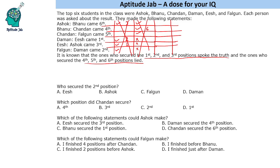Let us say we take 2 of the last 3 statements to be true. Let's take Fagun to be true. If Fagun's statement is true, Daman automatically becomes 2nd, and Daman automatically becomes a truth teller. Then Ish also becomes a truth teller. So all 3 of the last group would be true — we cannot take Fagun to be a truth teller.